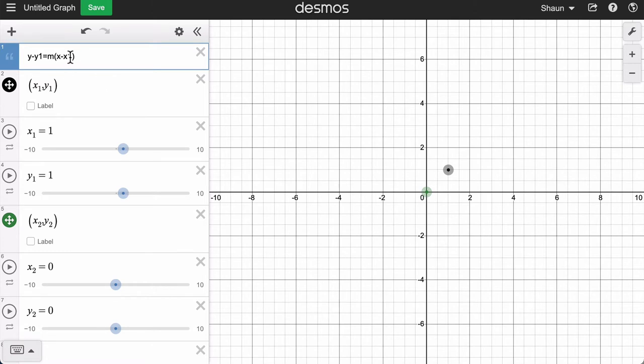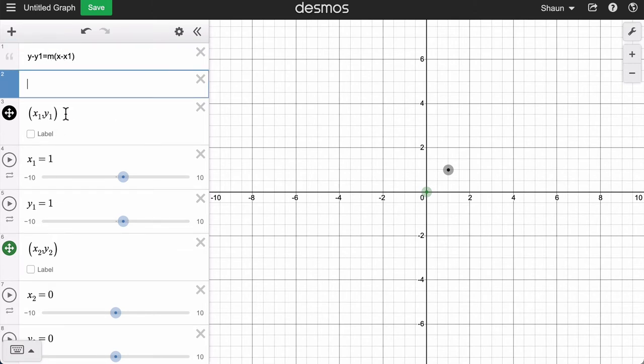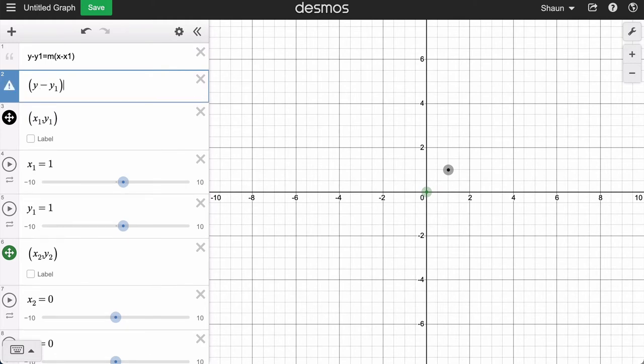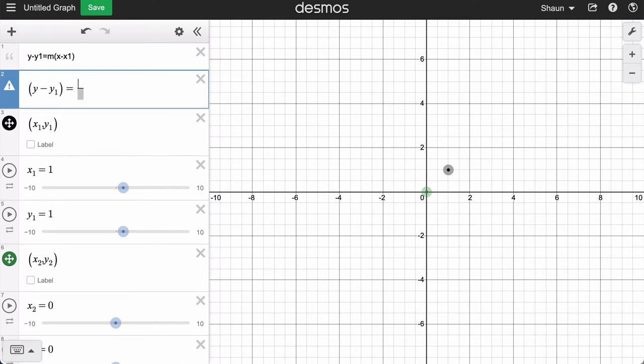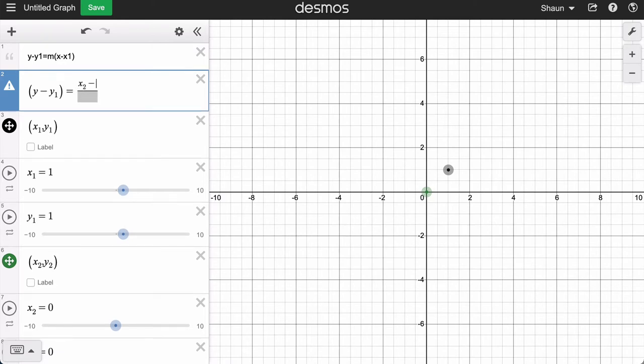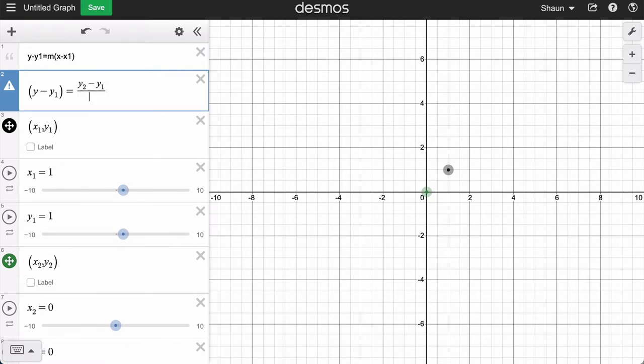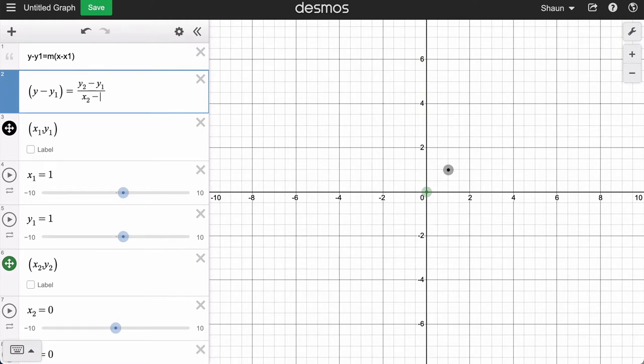So we're going to generate this formula right now using these points. So we have y minus y1 equals m. Now the slope, I'm going to hit a slash for a fraction. That's going to be, I'll do y2 minus y1 over, rise over run, x2 minus x1. That's our slope, and then in parentheses, x minus x1, and you can see that that's our line right there.